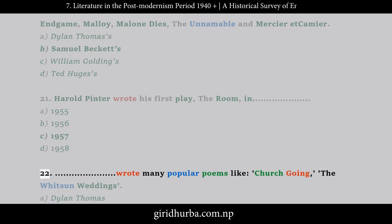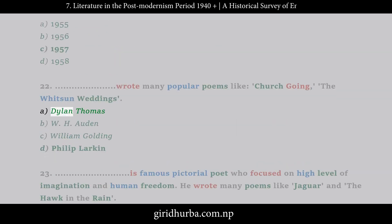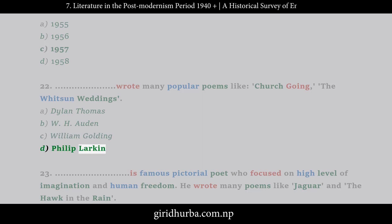Question 22: Who wrote many popular poems like Churchgoing and The Whitsun Weddings? D. Philip Larkin.